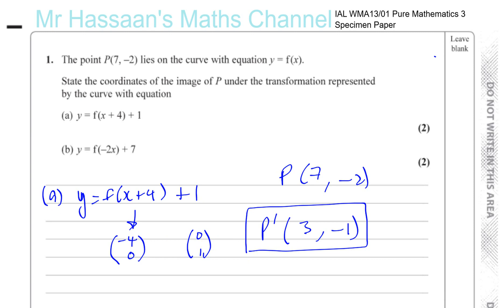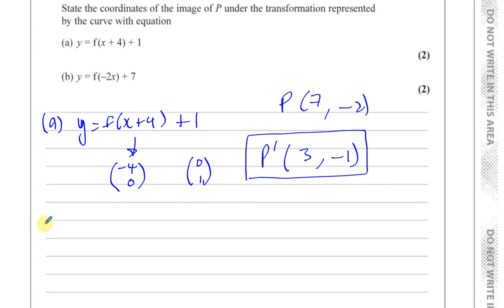Simple as that. And part B, we have y = f(-2x) + 7. Again, what's inside the function affects the x-coordinate and acts kind of opposite. So there's actually two things going on here: it's a horizontal stretch and also a reflection in the y-axis. It's the x-coordinates that change. How do they change?